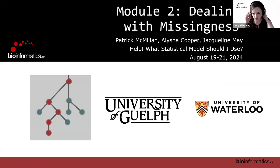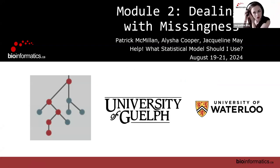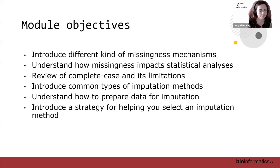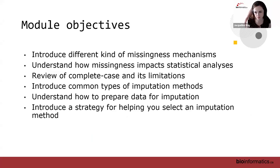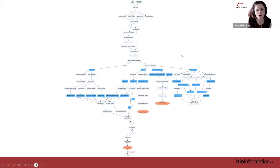Welcome to module two. Today we are focusing on missingness, which many of you said you have problems with in your data. The objectives are to introduce different kinds of missingness mechanisms, understand how missingness impacts statistical analyses, review complete case analysis and its limitations, introduce common types of imputation methods, understand how to prepare your data for imputation, and introduce a strategy to help you select an imputation method for your dataset.